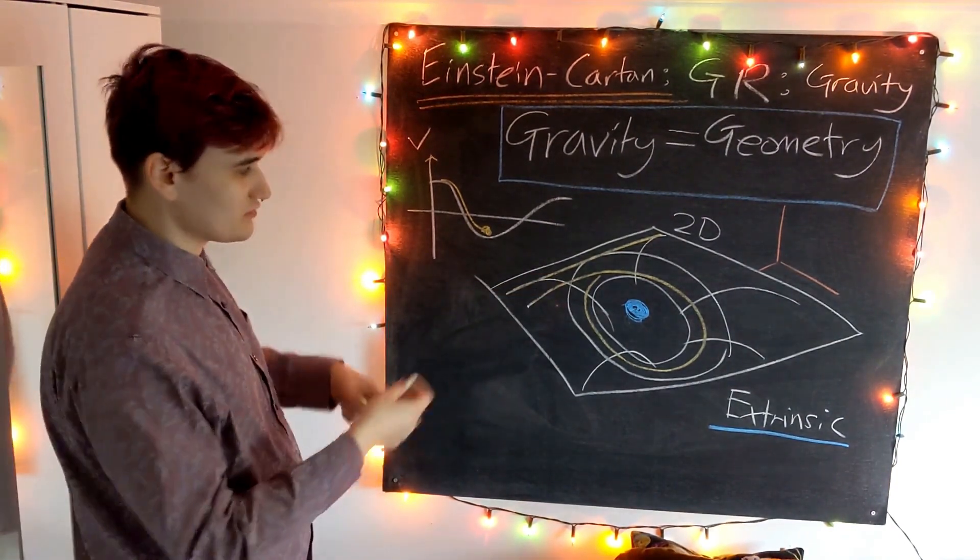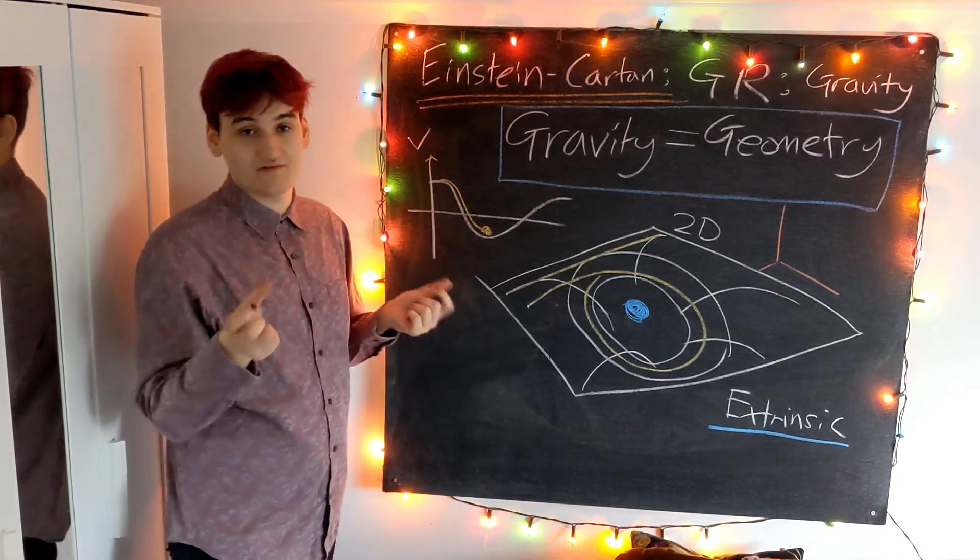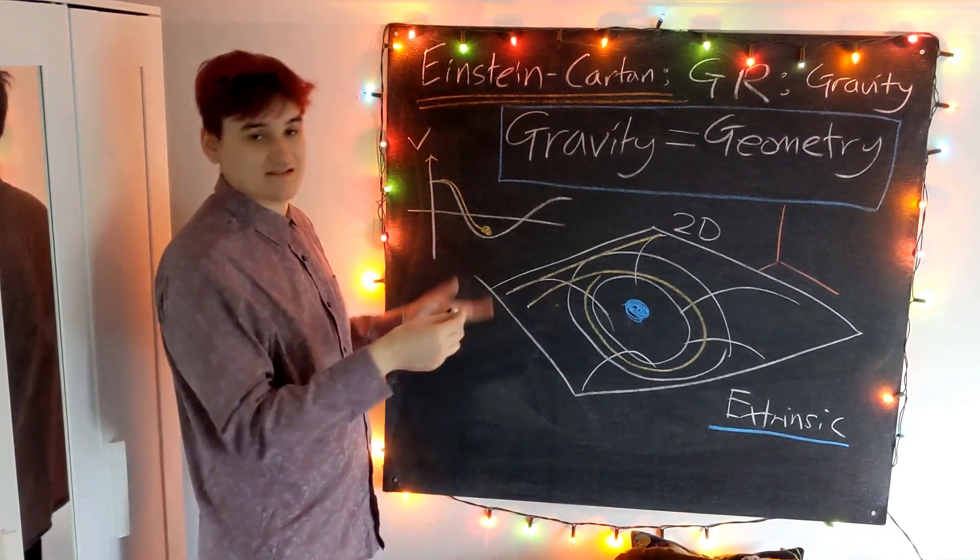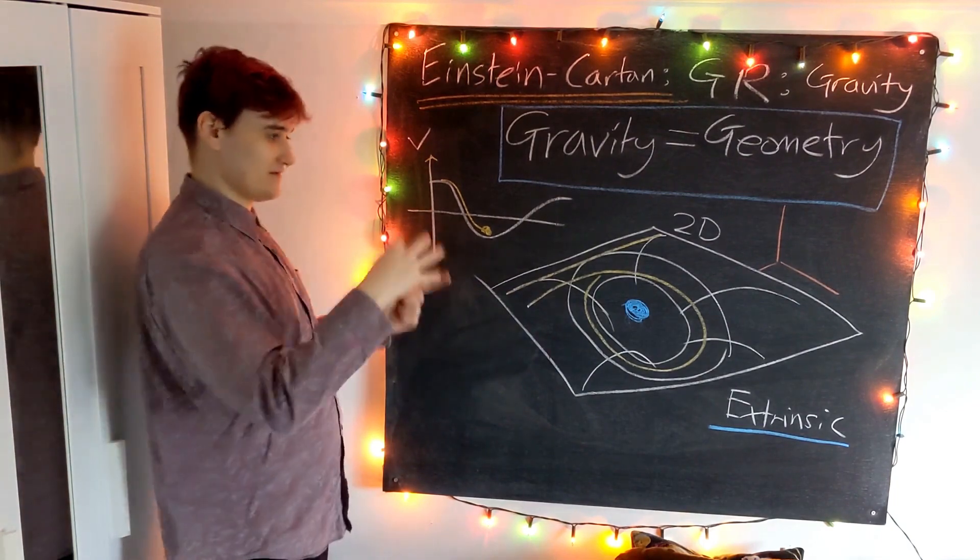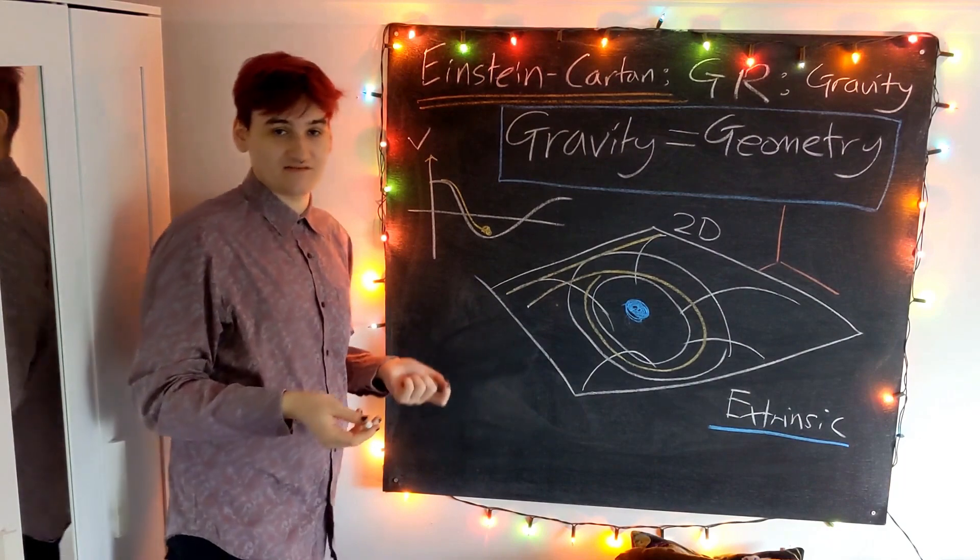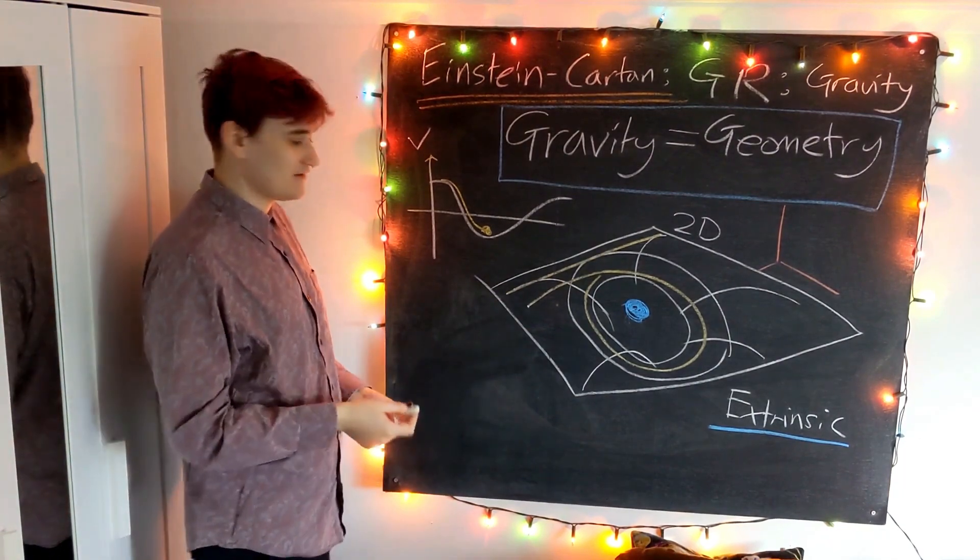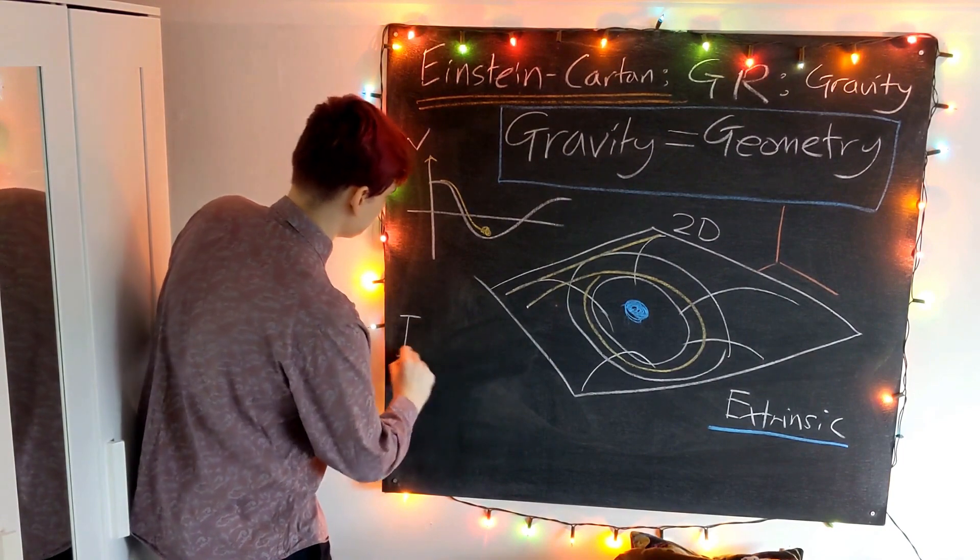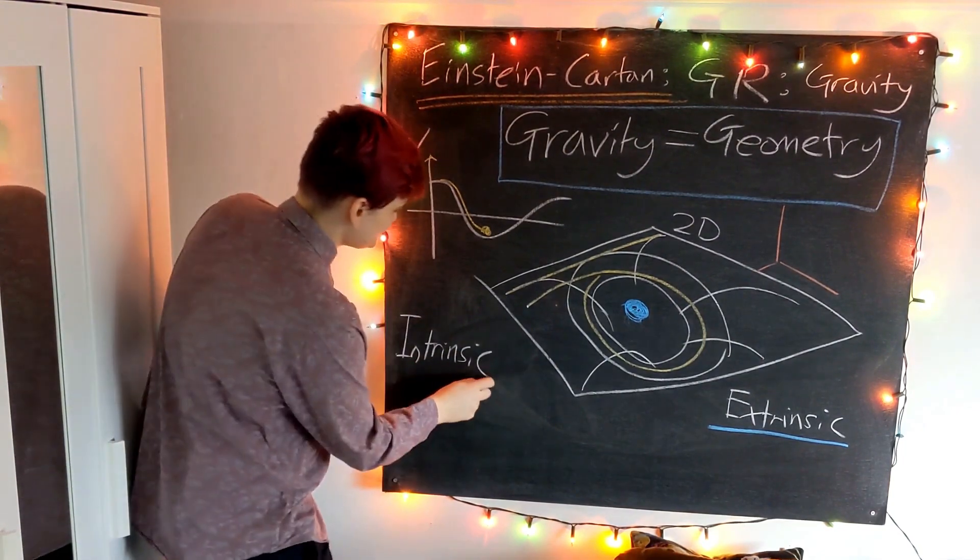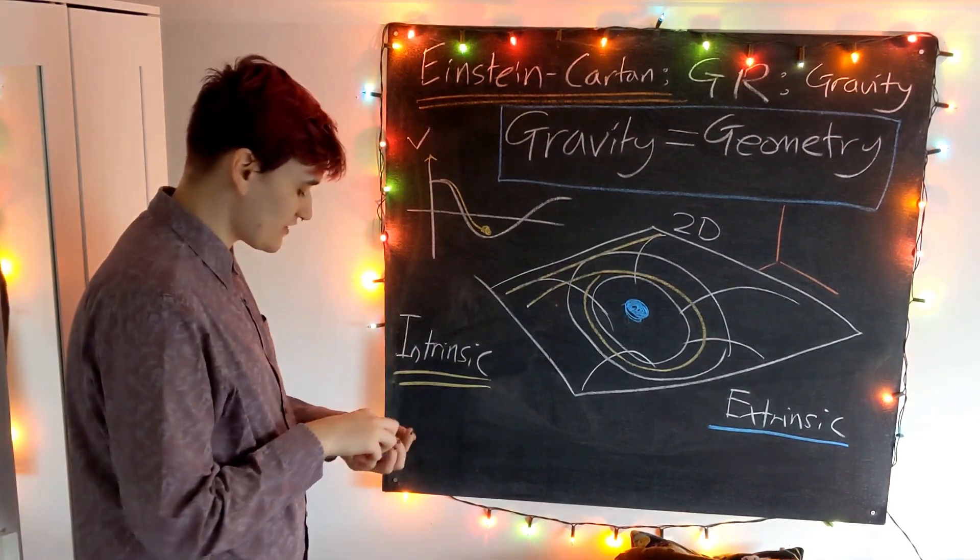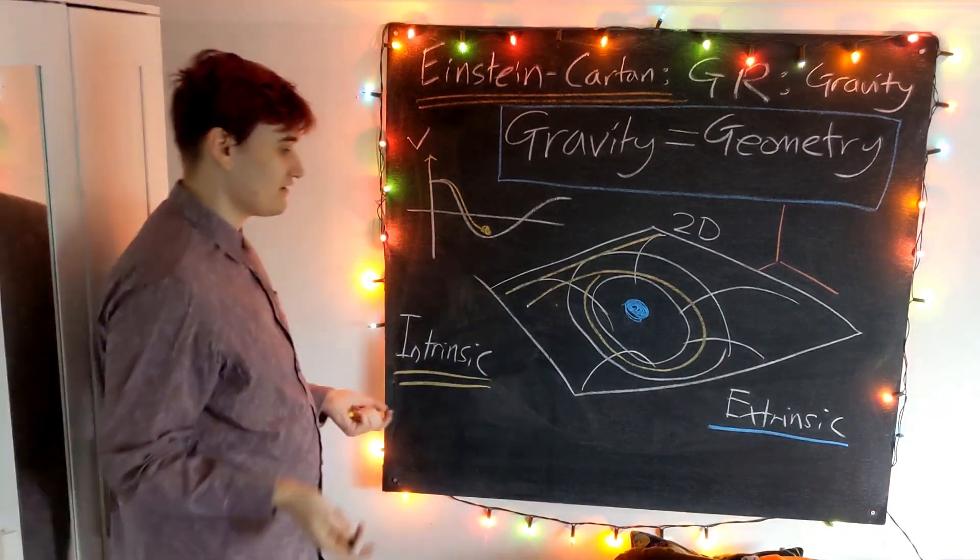Any kind of extrinsic curvature—our universe could be bent into some fifth dimension, but we'd have no way of knowing because that's only apparent if you're looking at it from the fifth dimension. In general relativity, when we talk about gravity, we only want to look at intrinsic curvature.